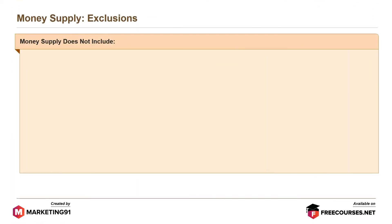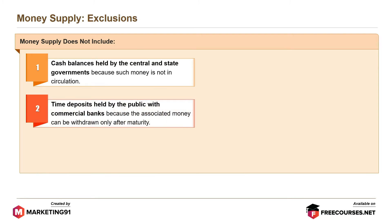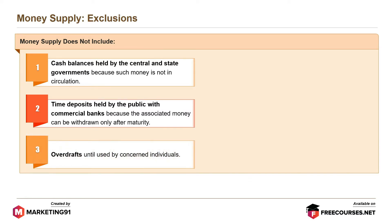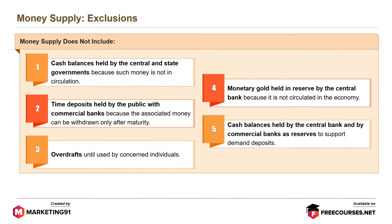Money supply does not include: cash balances held by the central and state governments because such money is not in circulation; time deposits held by the public with commercial banks because the associated money can be withdrawn only after maturity; overdrafts until used by concerned individuals; monetary gold held in reserve by the central bank because it is not circulated in the economy; and cash balances held by the central bank and by commercial banks as reserves to support demand deposits.